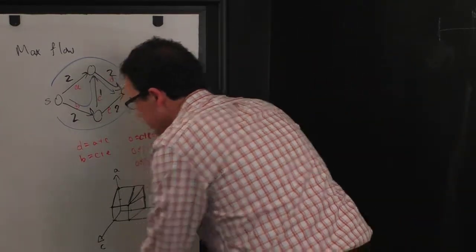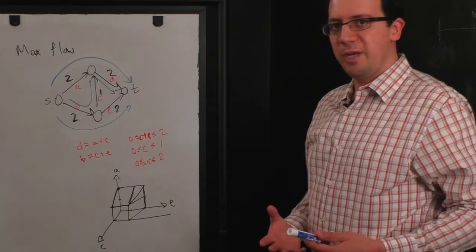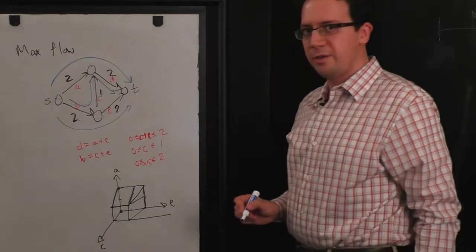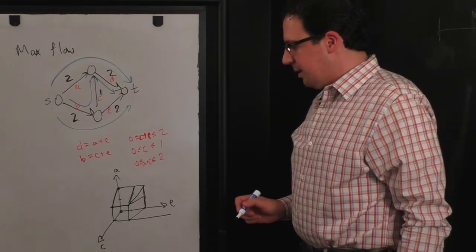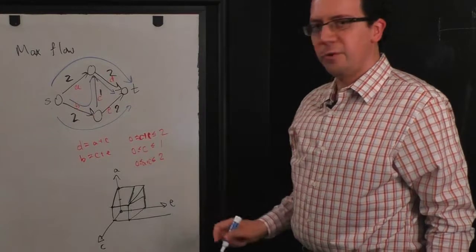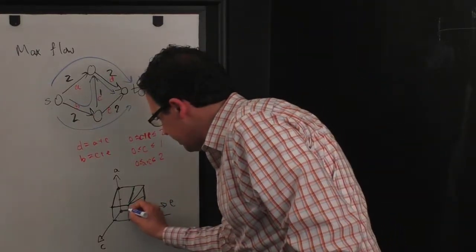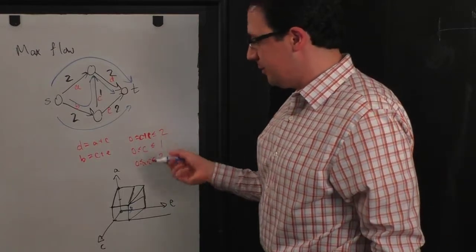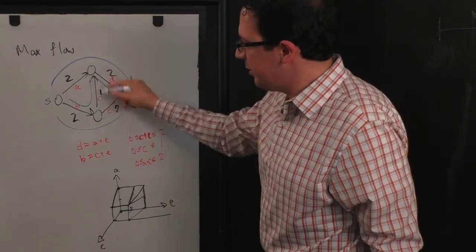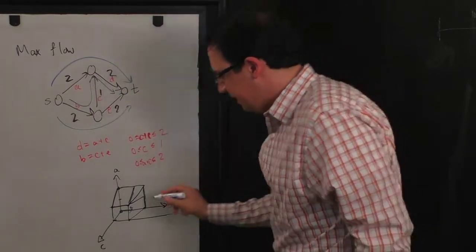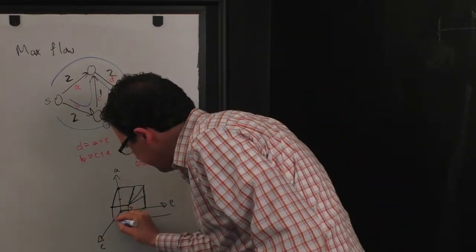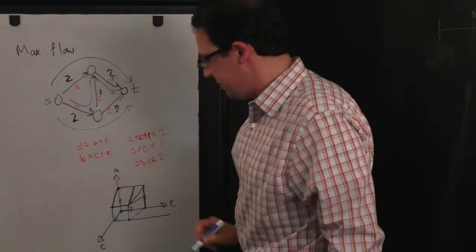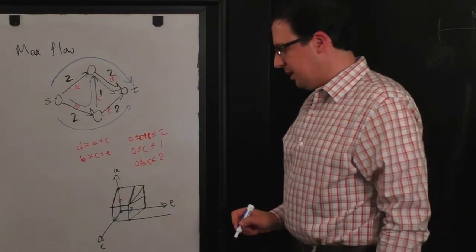And now let's see what are the moves that we've allowed ourselves to make. So we start out with no flow anywhere. So we start out at zero, zero, zero. Well, one thing we could do is we could put one unit of flow along here. So that corresponds to moving that way, one unit. Another thing we could do starting from zero is we could put one unit of flow along this middle edge or along this path. So that corresponds to moving this way. And similarly, we could add one unit of flow to A and D, which corresponds to moving this way.